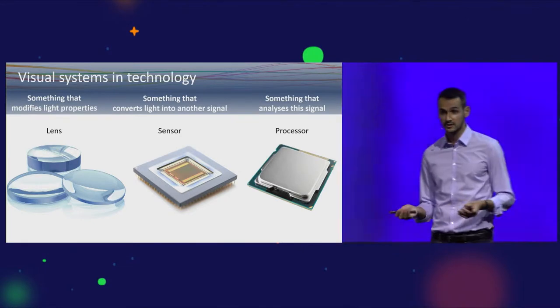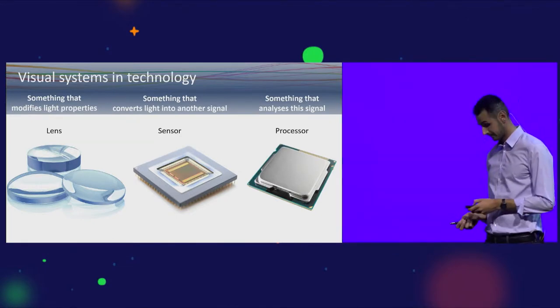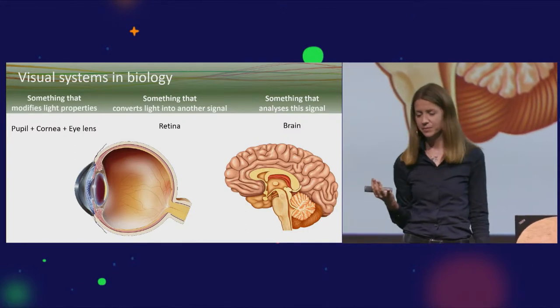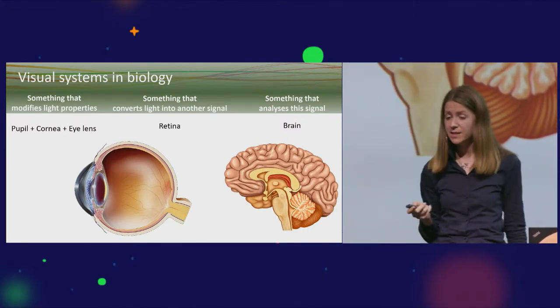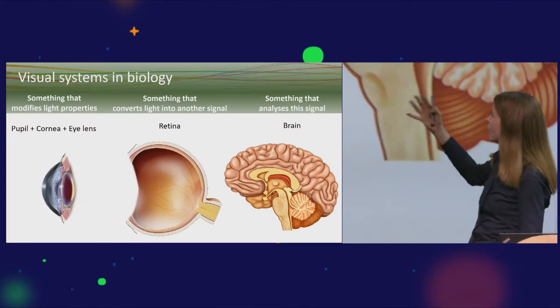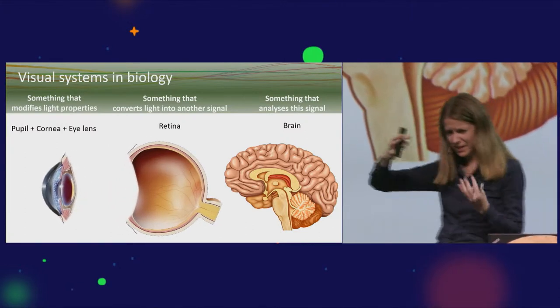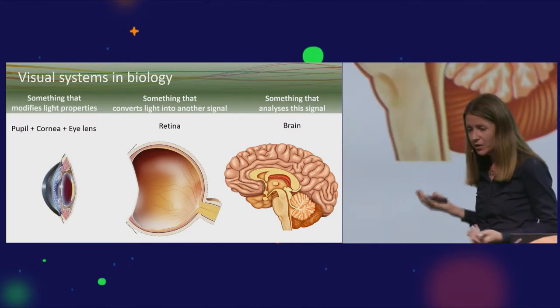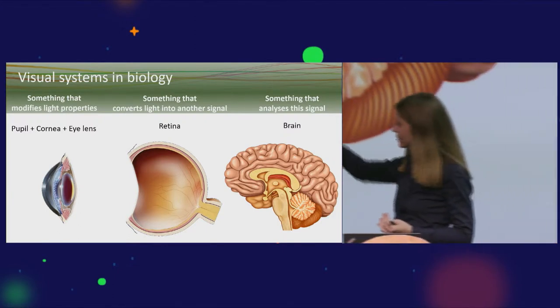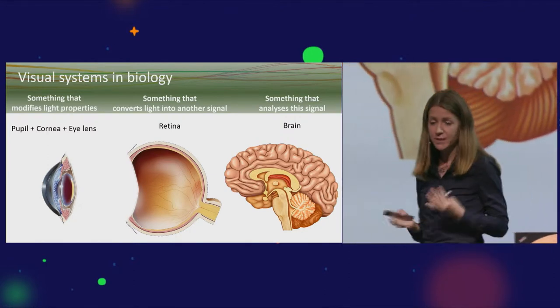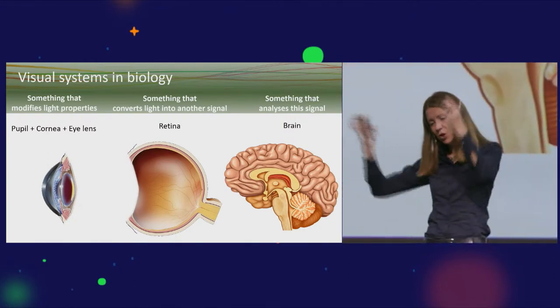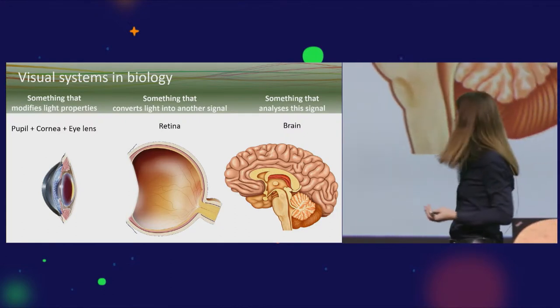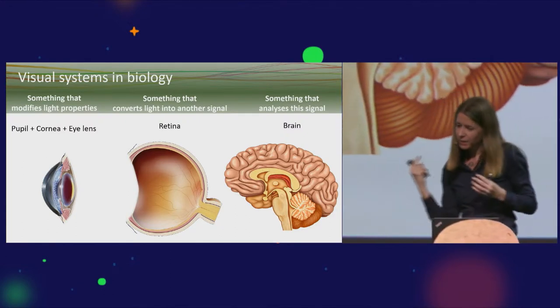This sensor would typically forward information to a processor to extract relevant pieces of information. Interestingly, if you look at biology we have the same segregation. We have the optical part, the pupil, cornea, and eye lenses. The sensor would be the retina on the back of your eye, or in animals some light-sensitive cells that convert optical energy into electrochemical signals that go to our processor, which is the brain.